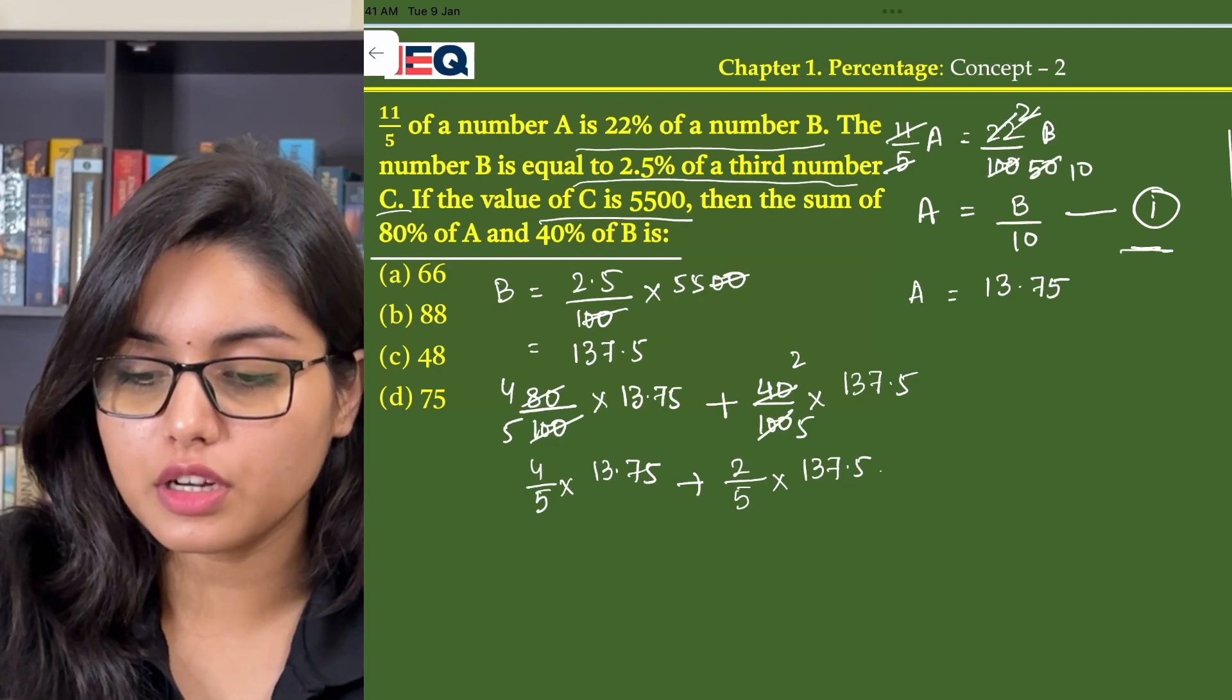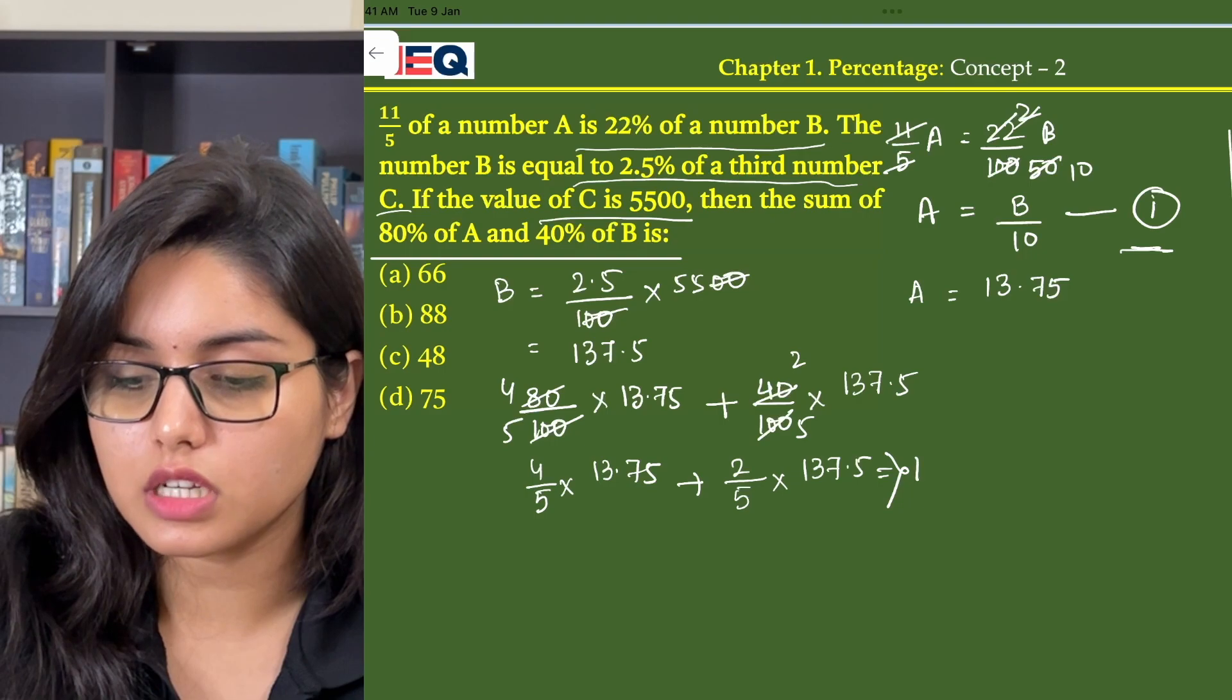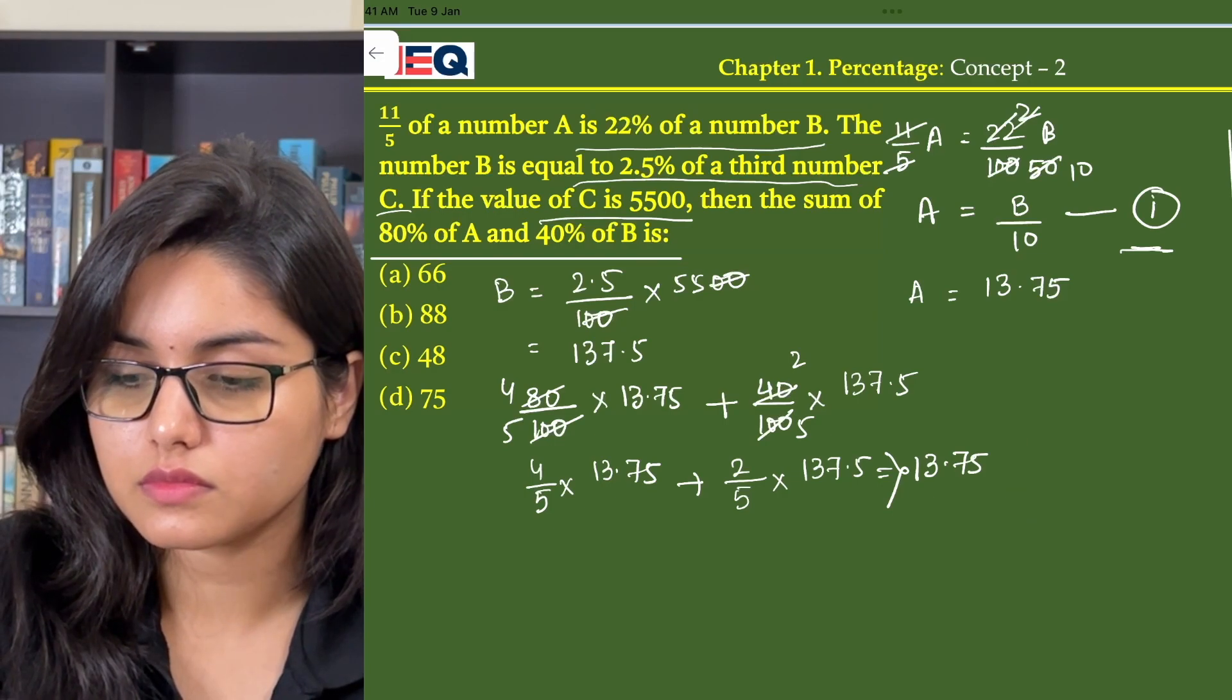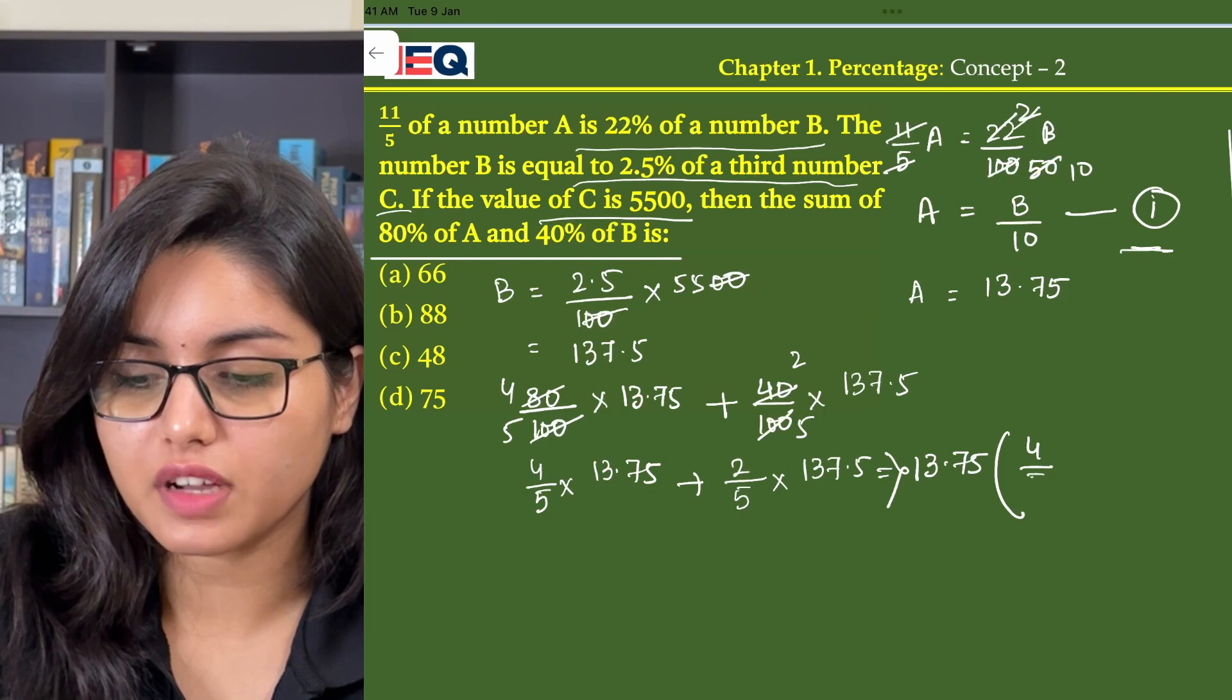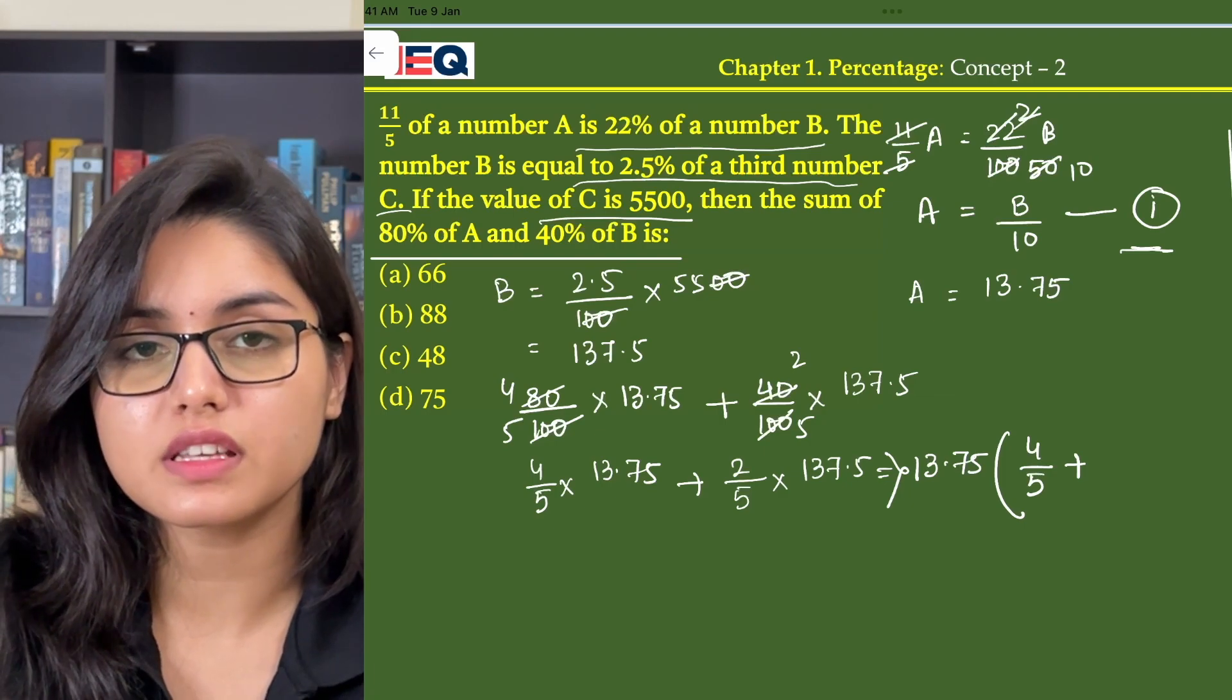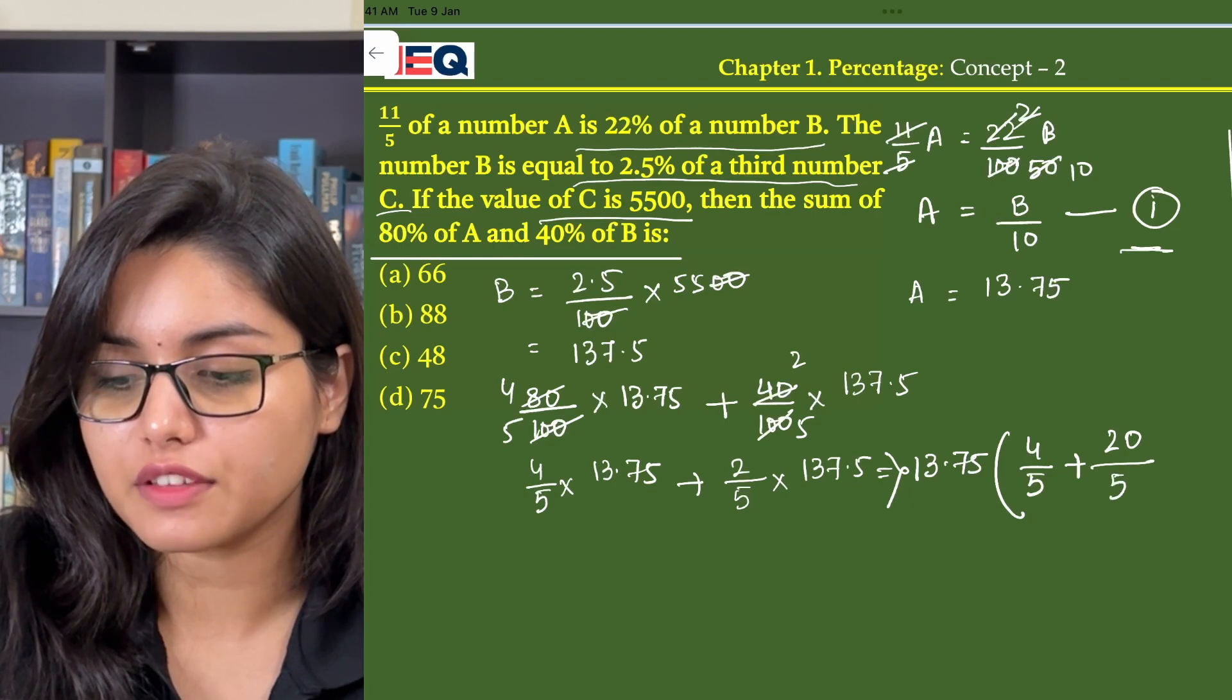Now we are left with 4 by 5 into 13.75 plus 2 by 5 into 137.5. Now from here if we take 13.75 as common, we are left with 4 by 5 plus 2 by 5 into 10 because we have taken 13.75 as common, so we still have 10 left. So 20 by 5.